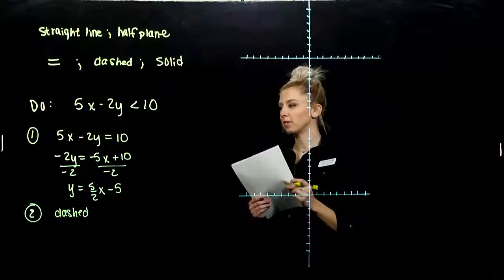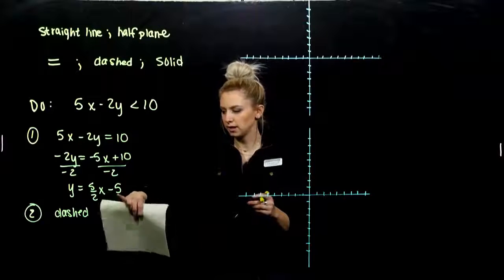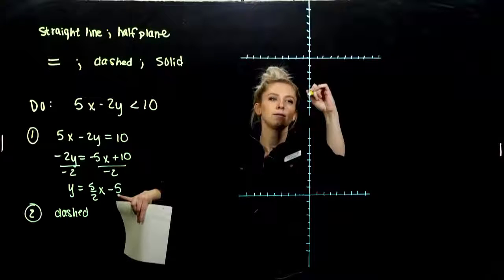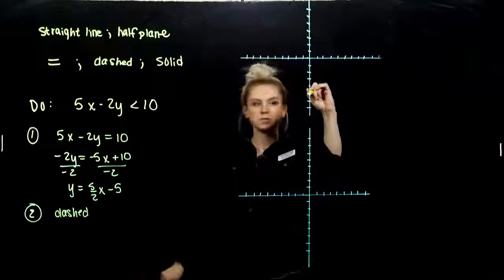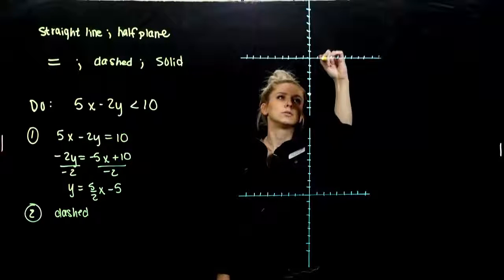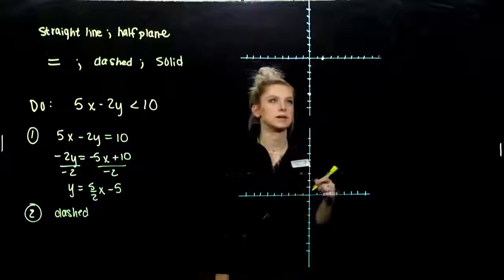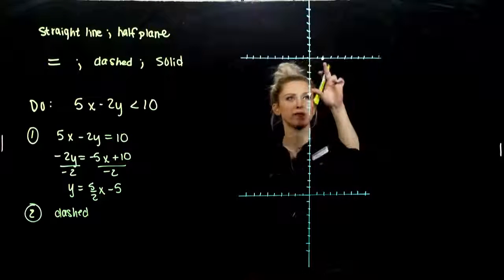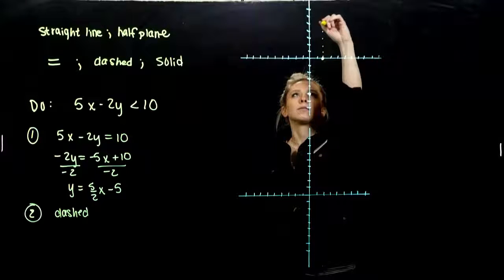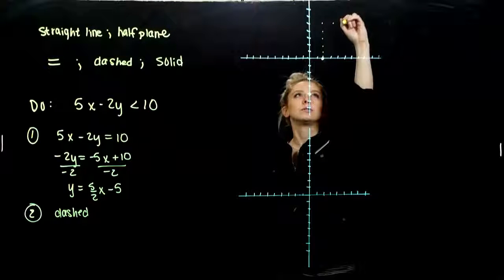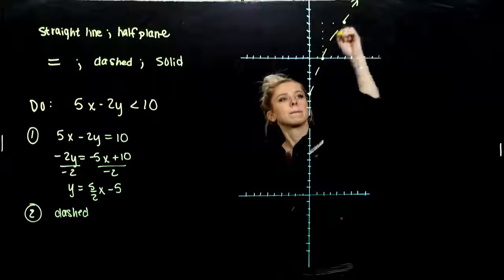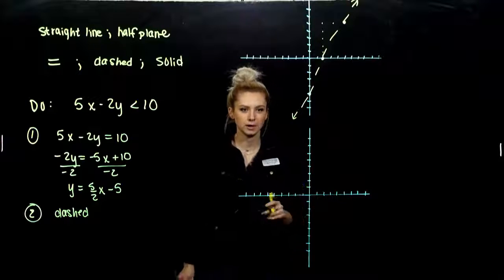Let's go ahead and graph, then we'll choose a test point. My line goes through (0, −5). From there I move according to my slope: up 5, over 2. We hit both intercepts — if you chose the intercept route, there they are. Moving again up 5, over 2 for additional points. The line is dashed. Get out your straight edge — it'll look prettier than mine.